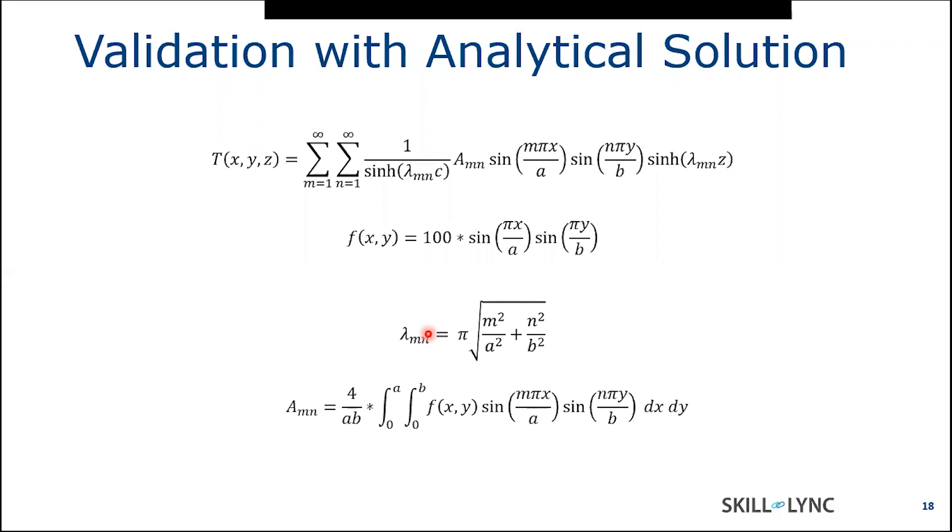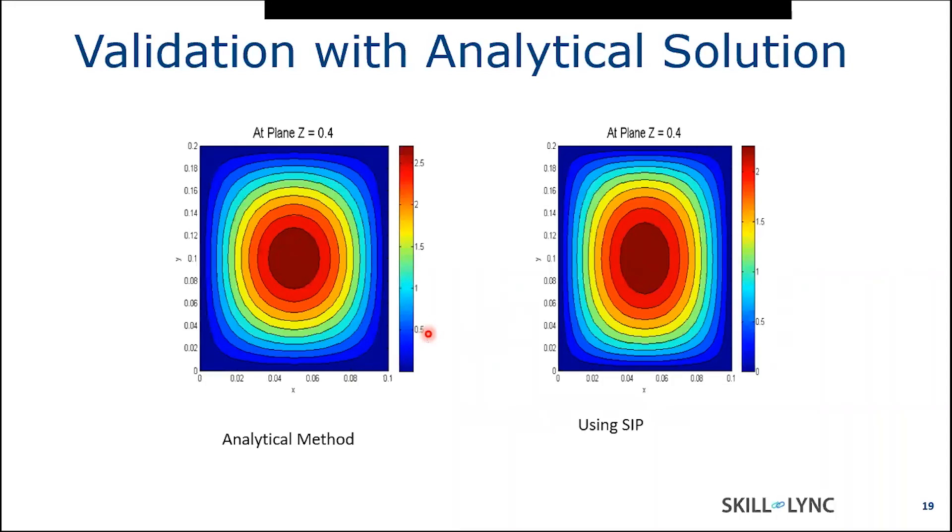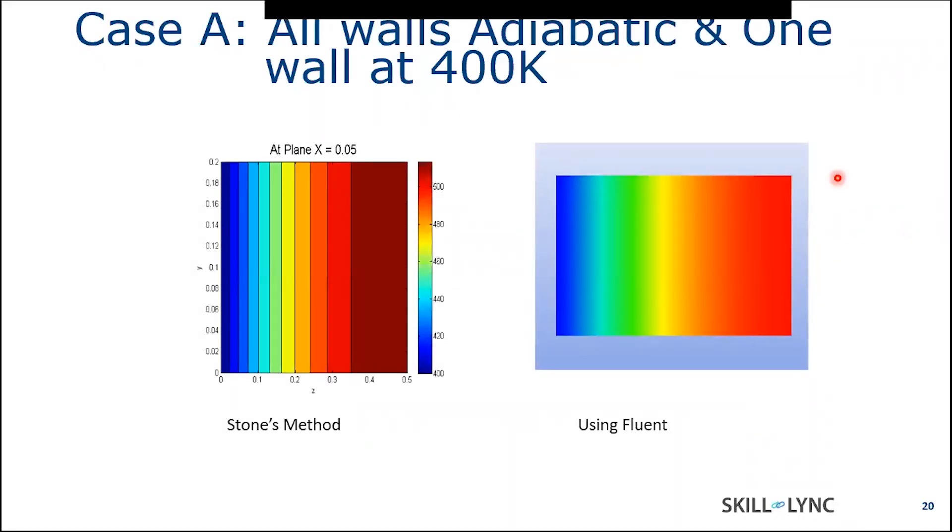As far as validation with the analytical solution is concerned, the solution for one of the problems with the sinusoidal heat flux on one side of the rectangular bar is provided in the mathematical method for engineering textbook. And I solved the solution and solved my problem and I'm presenting the solution at one of the planes because I don't know how to do the volume rendering in MATLAB. So I have done it for one of the planes. x is equal to 0.4 and you can see there is not much difference. As far as the other cases, what we have done, I have compared using Fluent.